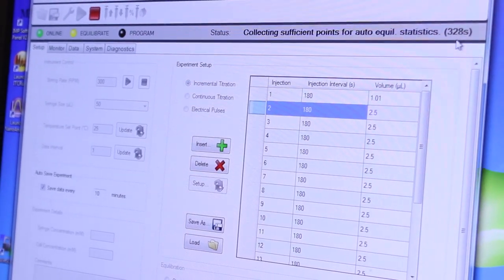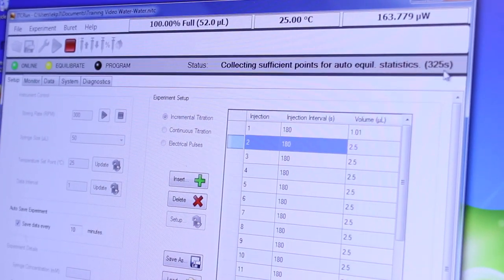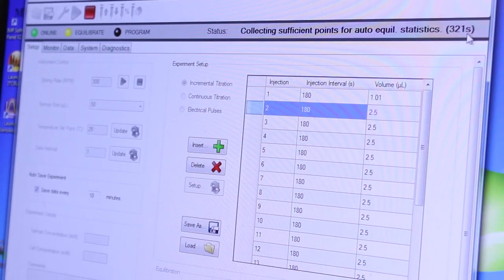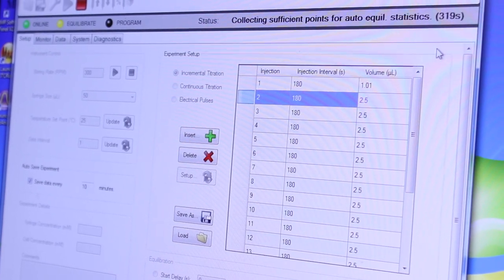At this point it will start collecting data points for the auto equilibration. Equilibration can take anywhere from five minutes to tens of minutes depending on how stable the instrument already is and how stable you need the baseline to be.